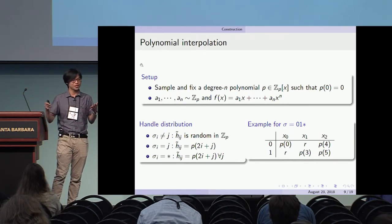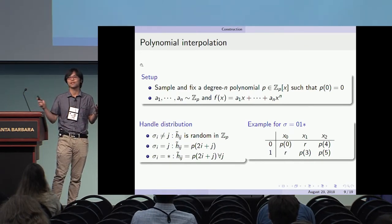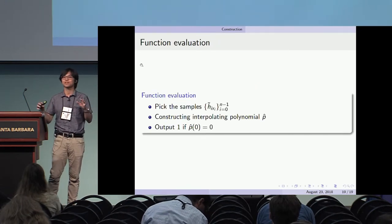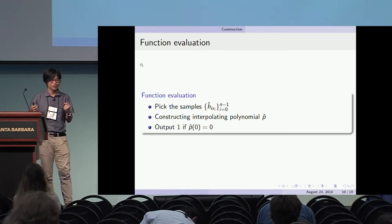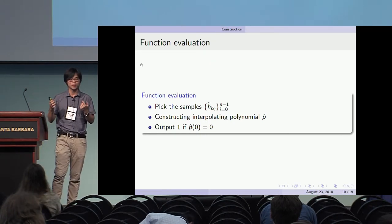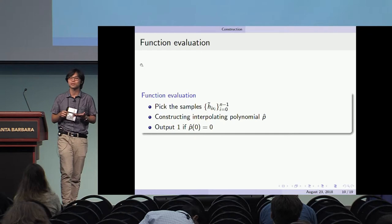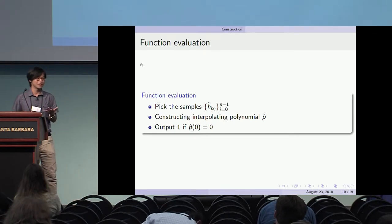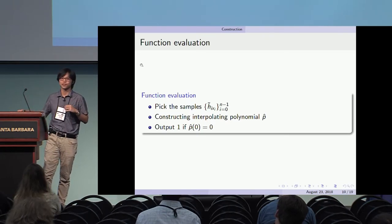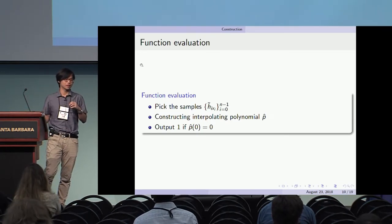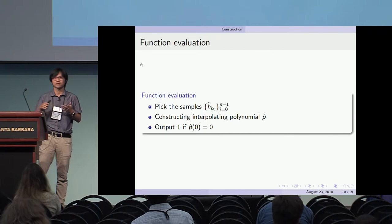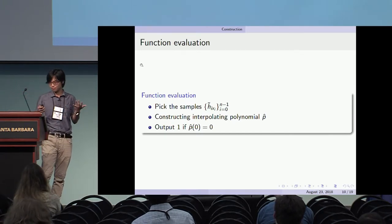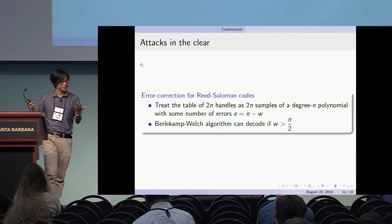Once you have this table, the evaluation proceeds as before: pick the samples, construct the interpolating polynomial p-hat, and output 1 if p-hat(0) = 0. This corresponds to whether all your samples were legitimate samples from the polynomial — if any sample was random, then p(0) would not be 0.